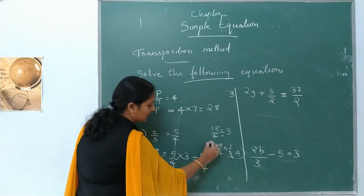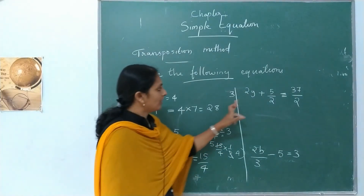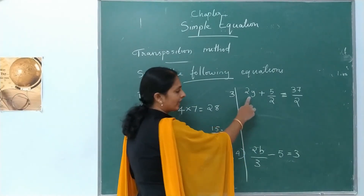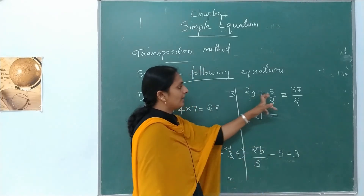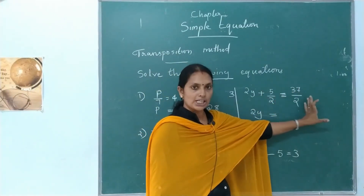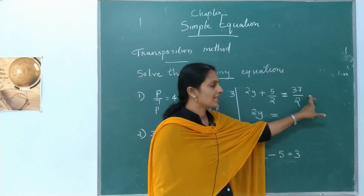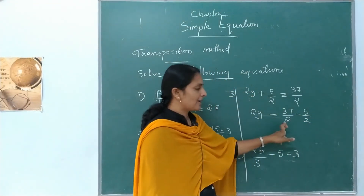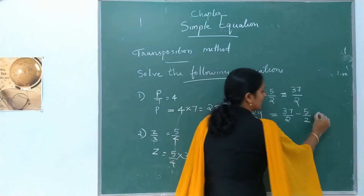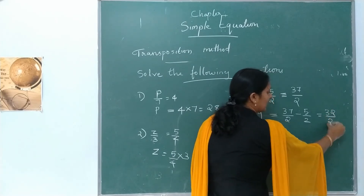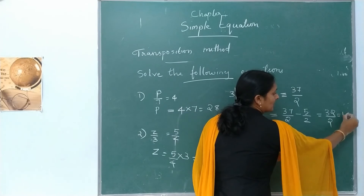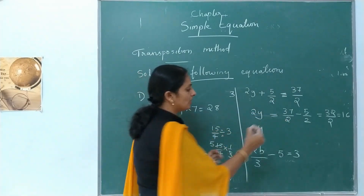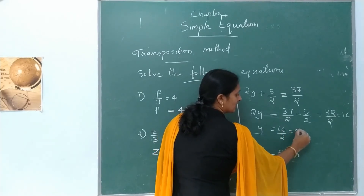Next one: 2y plus 5 by 2 is equal to 37 by 2. The variable term is 2y, which stands on the LHS. Transpose 5 by 2 to the RHS — it becomes negative. So 2y equals 37 by 2 minus 5 by 2. Denominators are the same, so 37 minus 5 equals 32, divided by 2 equals 16. Therefore 2y equals 16, and y equals 16 divided by 2, which is 8.